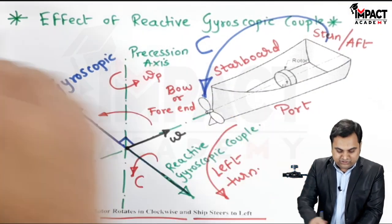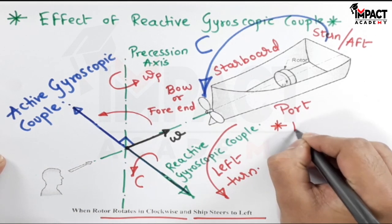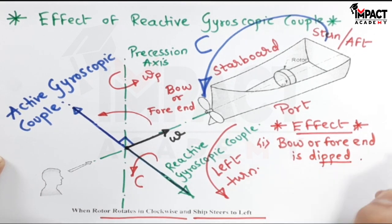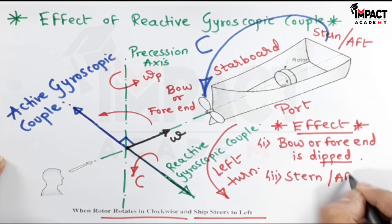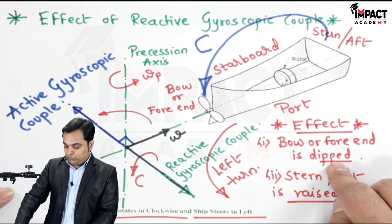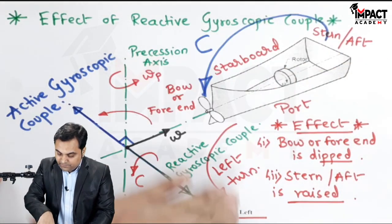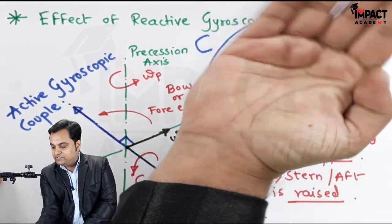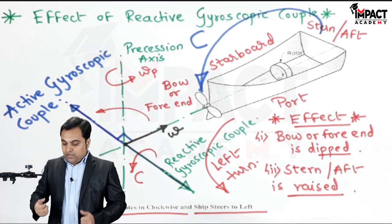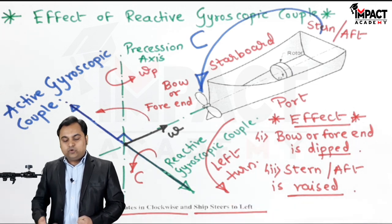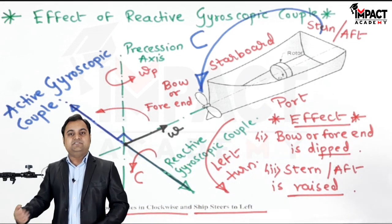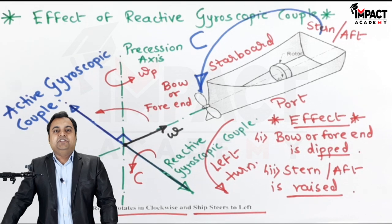When this couple is transferred to the ship, the effect is: the bow or fore end is dipped — as we can see, the arrow is dipping the fore end — whereas the stern or aft is raised, because the couple is acting in this direction. So the reactive gyroscopic couple effect when the ship's rotor rotates clockwise and it takes a left turn is: the fore end gets dipped and the stern gets raised.